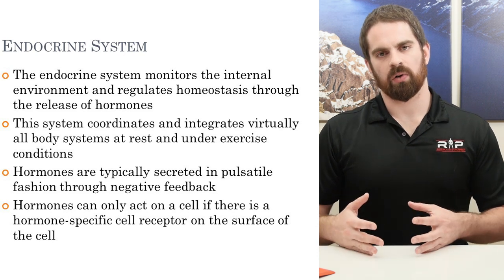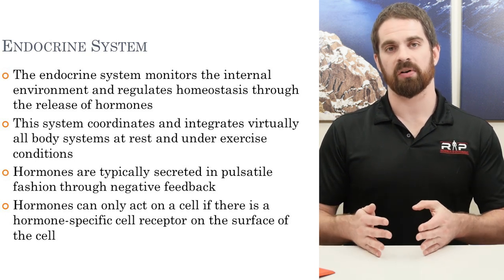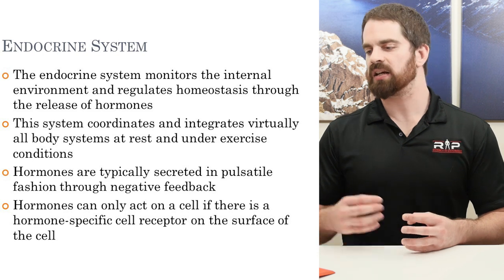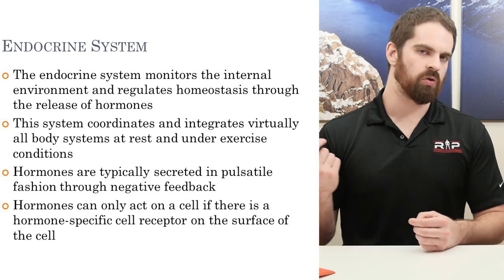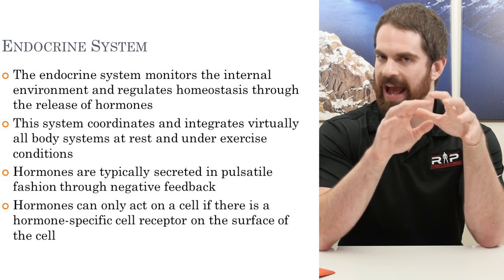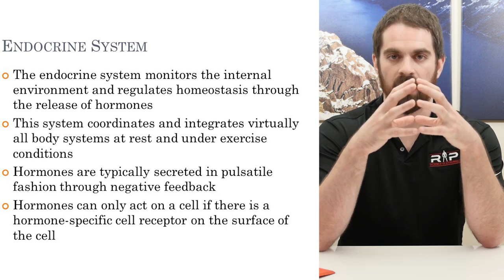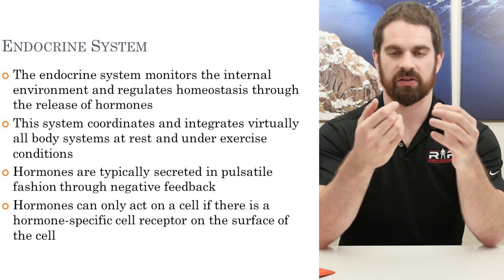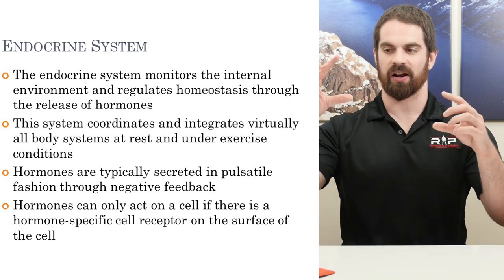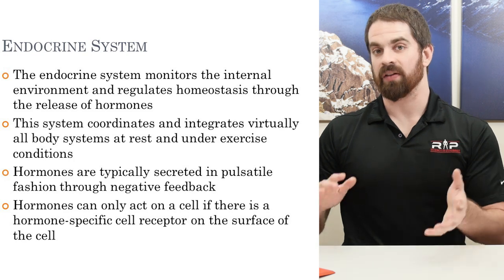One key aspect of hormones is specificity: there must be a hormone-specific cell receptor at the surface of whatever tissue the hormone wants to act on. You could be sending cortisol, insulin, epinephrine, or norepinephrine through the bloodstream, but if there's no specific cell receptor on the target tissue, it won't do anything. Think of it like a circle-square-triangle game — the triangle floating through has to hit the matching triangle on the cell surface, otherwise it will not act. Each hormone requires a specific receptor.